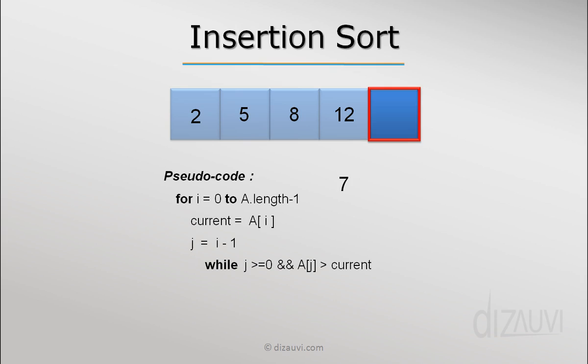As long as this condition is true, we keep shifting the element at index j to the right by 1. So here 12 shifts to the right, then we reduce the value of j by 1 so that we can access element 8. Since 8 is also greater than 7, we move 8 to the right, then again reduce j by 1, because this is happening in a while loop.